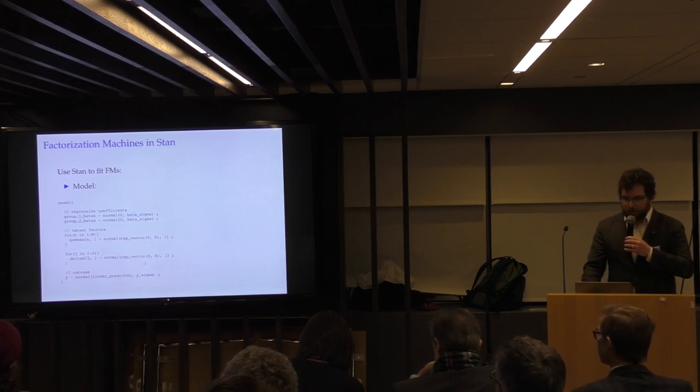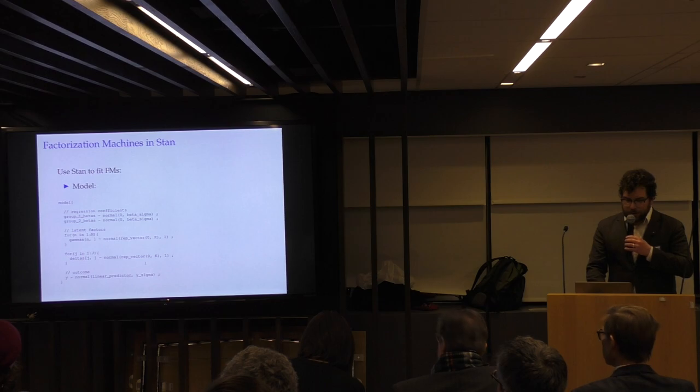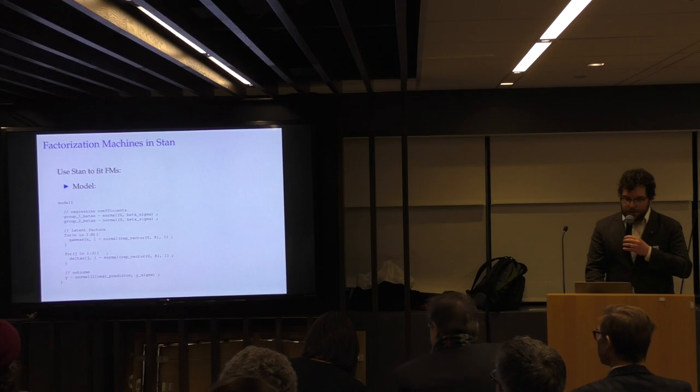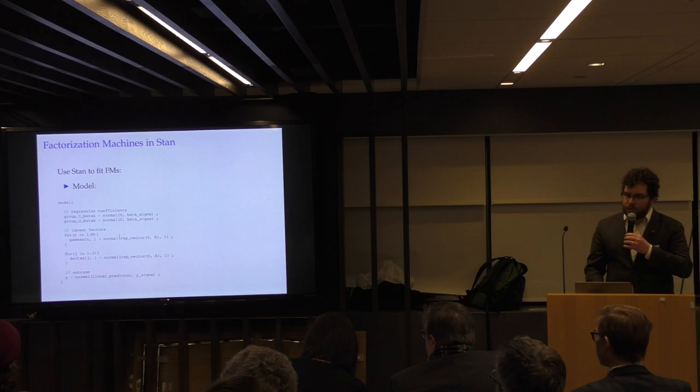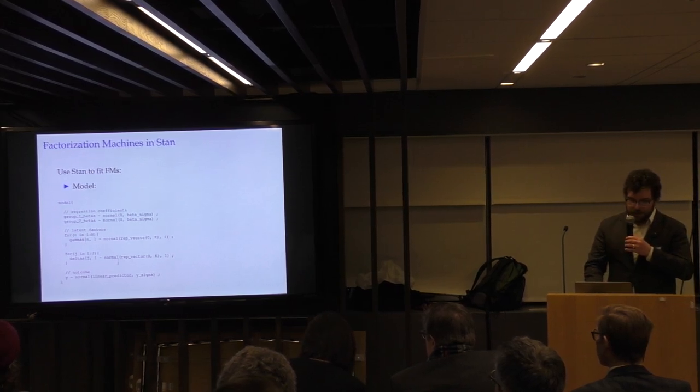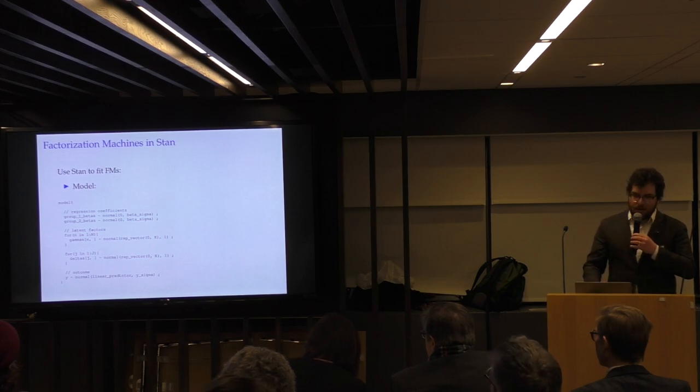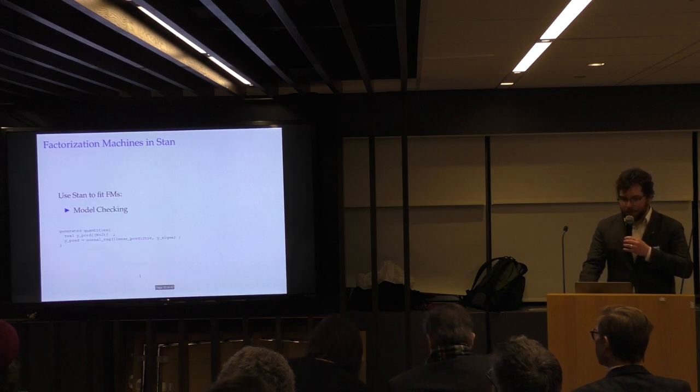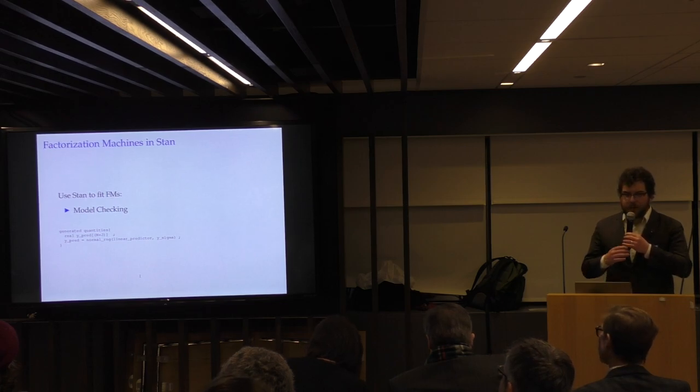Finally, this is the model part where you'll declare the priors on your model. So we have our group 1 and group 2 betas. And so we're using the same beta sigma there. And then for our latent factors, we're just, what I did here is I treated each row as a normal distribution. This is the equivalent of a multivariate normal model with an identity matrix. And the same for the deltas. And then our outcome is normally distributed. The mean is the linear predictor. And our standard deviation is the Y signal we provided up top.